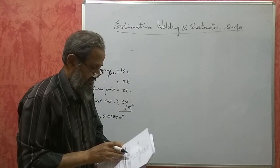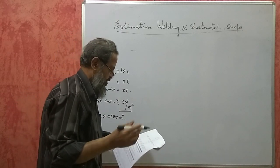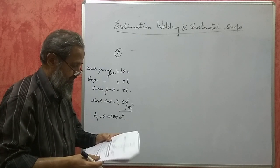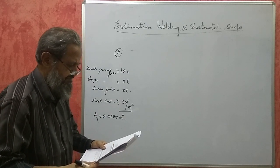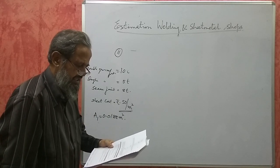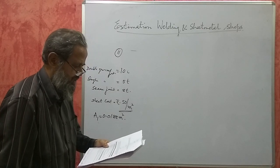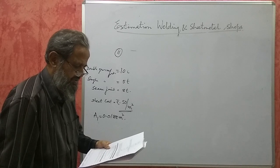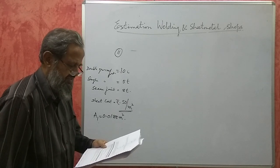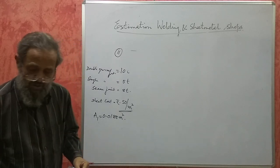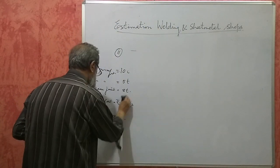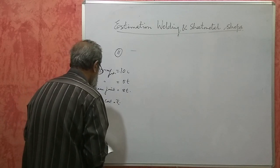We will take one more problem from the question bank on sheet metal. This is problem number 11, the last one. A cylindrical drum of size 2.75 meters high and 1.5 meters mean diameter is to be fabricated from sheet of 5 mm thickness by grooved seam joint, with both ends closed by sheet with single seam joint. Determine the material cost if the sheet is available at rupees 2000 per square meter.